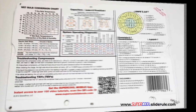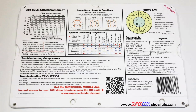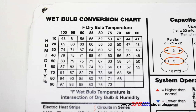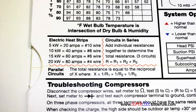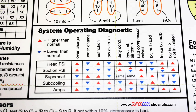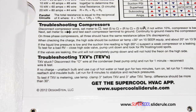The back cover contains required formulas. It has capacitor rules and practices, a wet bulb conversion chart, how to perform computations on series or parallel circuits, an electric heat strip guide, and a complete system troubleshooting diagnostic chart.